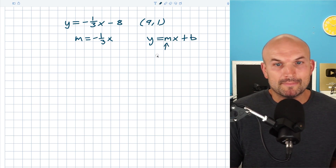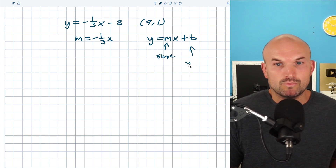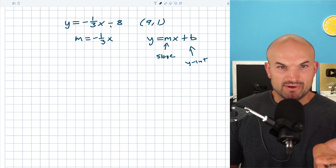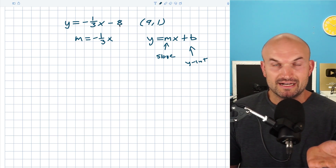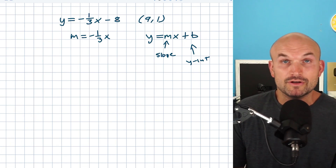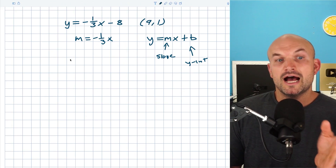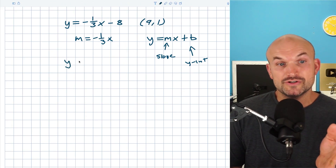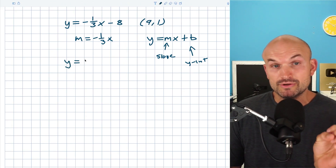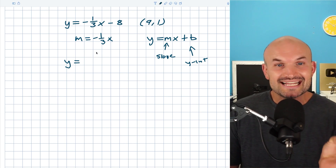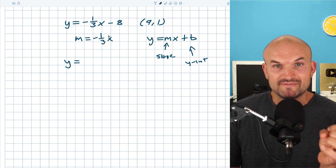Remember, m represents our slope and b represents the y-intercept. In our original equation we have a slope of negative one-third and a y-intercept of negative eight. I don't know what the y-intercept of my new equation needs to be. However, since it has to be parallel, it has to have a slope of negative one-third.